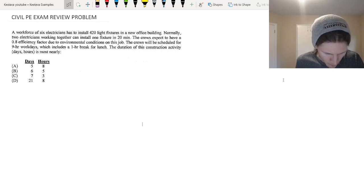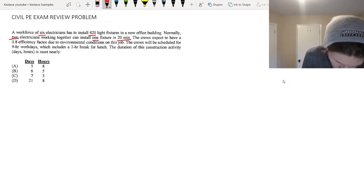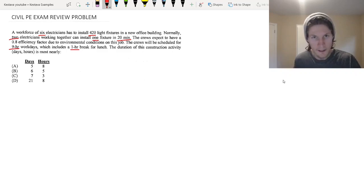We have a workforce of six electricians and they have to install 420 light fixtures in a new office building. Two electricians work together and can install one light fixture in 20 minutes. The crews expect to have a 0.8 efficiency factor due to environmental conditions on this job. The crews will be scheduled for nine hour work days which include one hour breaks for lunch. The duration of this construction activity, days comma hours, is most nearly what?